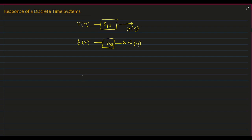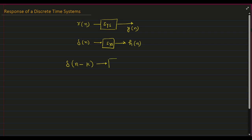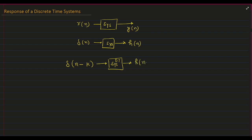Now, if I delay this input by K, then the input will be delta of N minus K. And when it is applied to the same discrete time system, because it is a time invariant system, therefore the output will also be delayed by K.